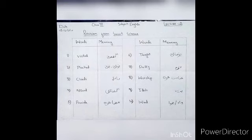Now our ninth word is idols. Its meaning is buddh. Means an image who represents God.